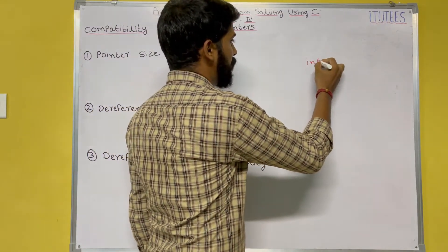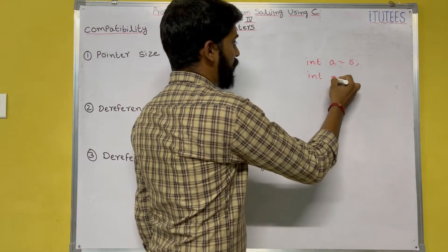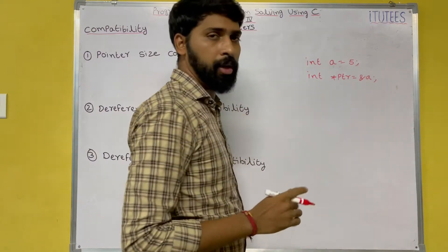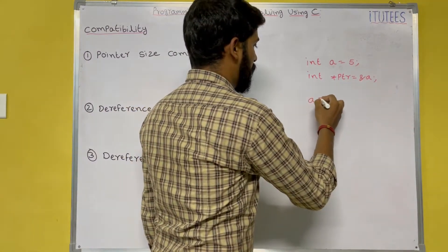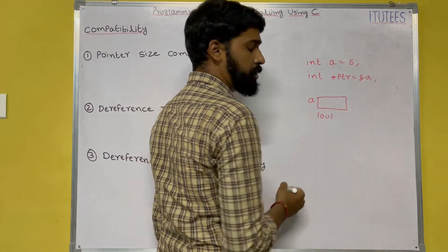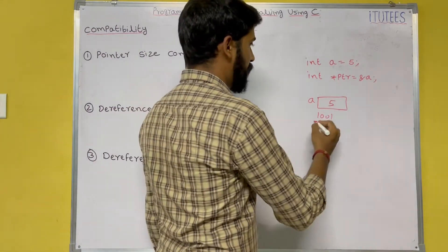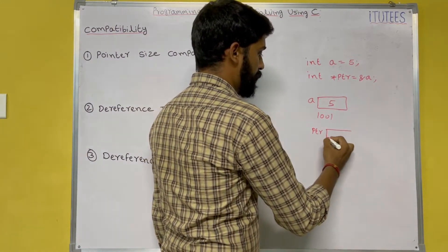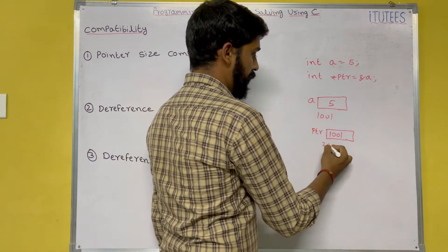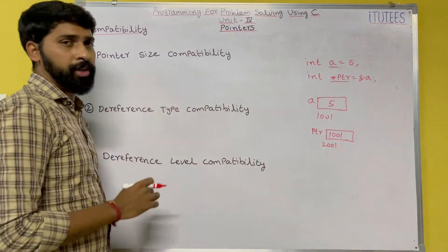I am declaring a variable a equals to five, and I am taking a pointer ptr equals to ampersand of a. So variable a has some address, let us assume 1001, and the content is five. So ptr is a pointer in which we store the address of a, which is 1001, and ptr also has its own address.